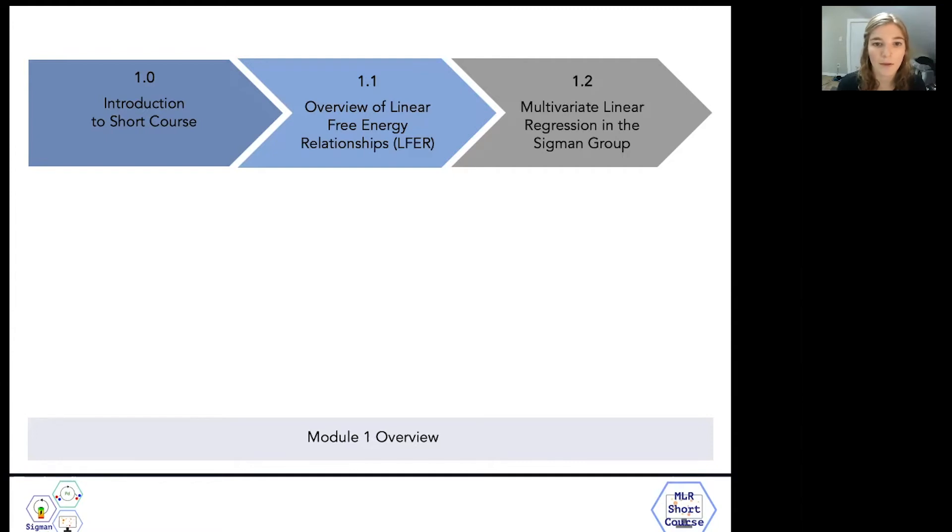We'll close module one by connecting classical linear free energy relationship techniques to the multivariate linear regression strategies that were initially used in the Sigmund group, and then we'll briefly overview the modern implementations of this statistical modeling strategy.